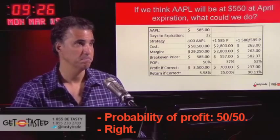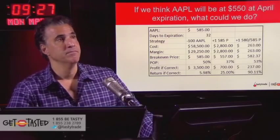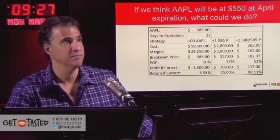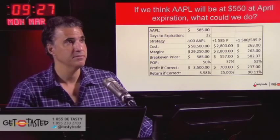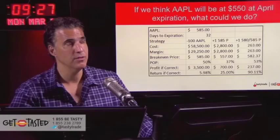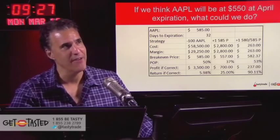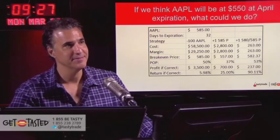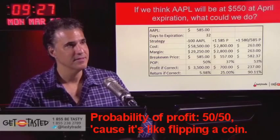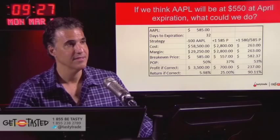Breakeven price is $585 — that's where you entered the trade. Probability of profit is 50-50. Profit, if correct, is $3,500. Return on profit is about 6%. Shorting 100 shares of stock requires $58,000 capital, or $29,000 on margin. Breakeven price is the same as where you started, $585. Probability of profit is 50-50 because it's just like flipping a coin. Profit, if correct, $3,500. Return on that $58,000 for the 32 days — 6%.